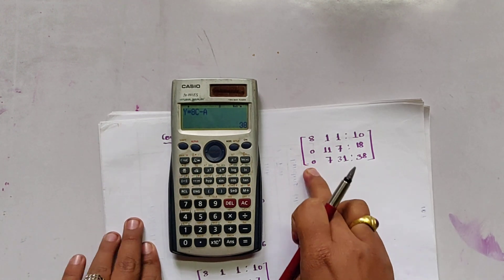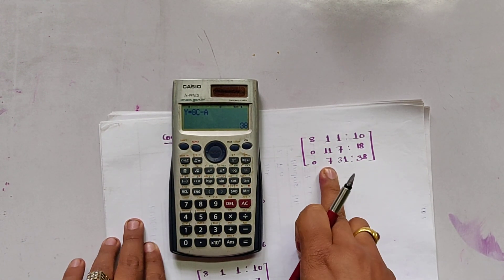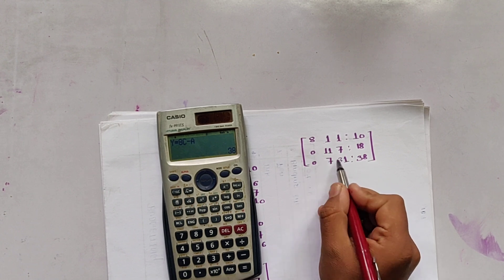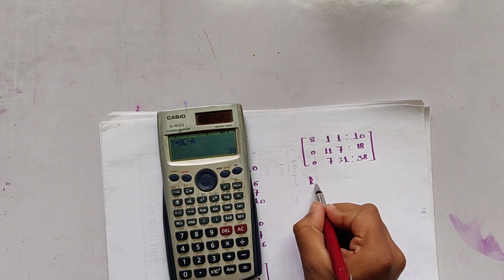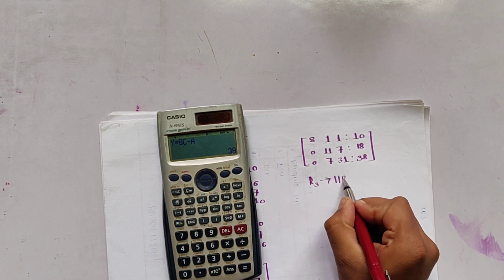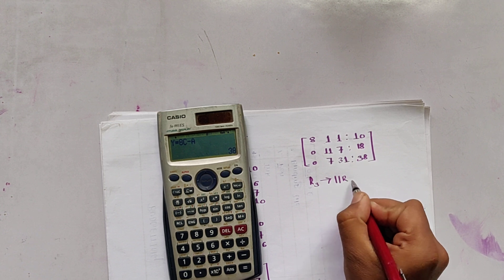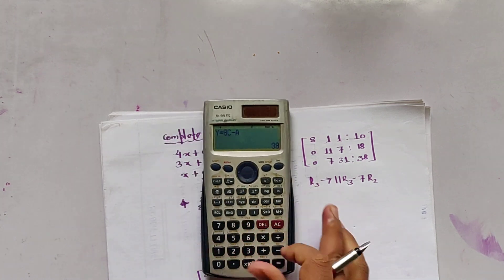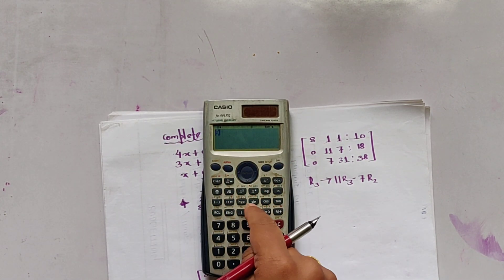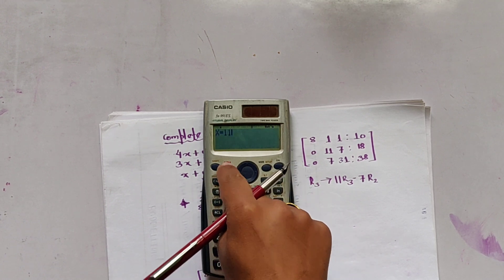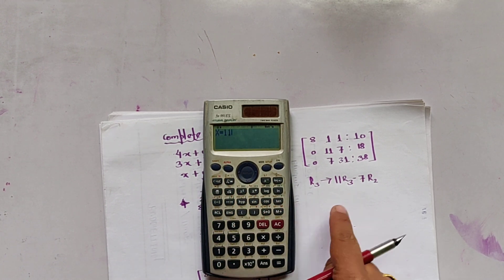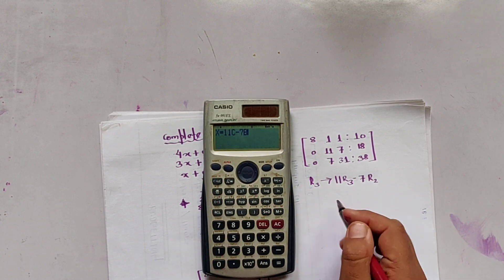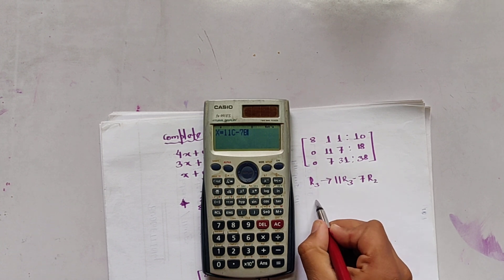So this is the new augmented matrix after changing the rows. Now this coefficient, this part is 0, so we have to convert 7 into 0. For converting 7 and 11, the LCM is 77. So R3 is 11 times R3 minus 7 times R2.